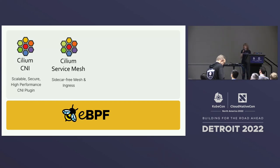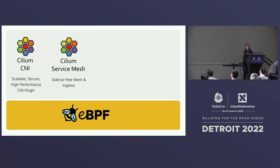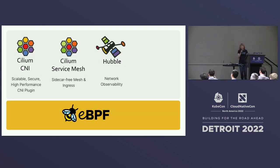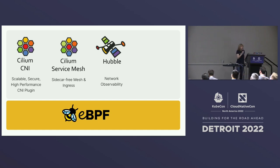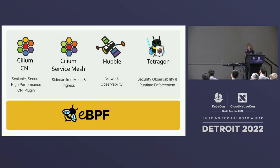Do we have any people who have been trying the service mesh in Cilium? I see a few hands. How about Hubble for observability? Who's using Hubble? A few hands. And Tetragon for security — any users? Excellent.